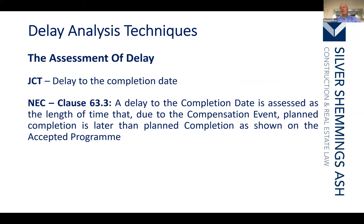Different contracts deal with delay assessment differently. Under the JCT, a delay to the completion date is assessed as the delay caused to the completion date — if a job was programmed to complete in 50 weeks and completes in 60 weeks, the delay is 10 weeks. The NEC is different: under the NEC, the delay is assessed as the difference between the previous accepted program and the current accepted program.